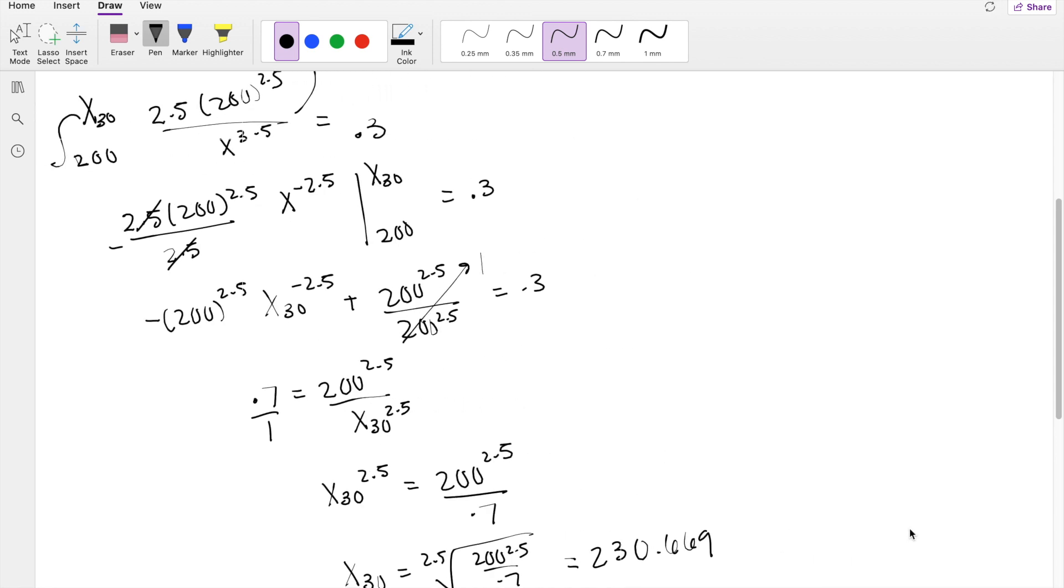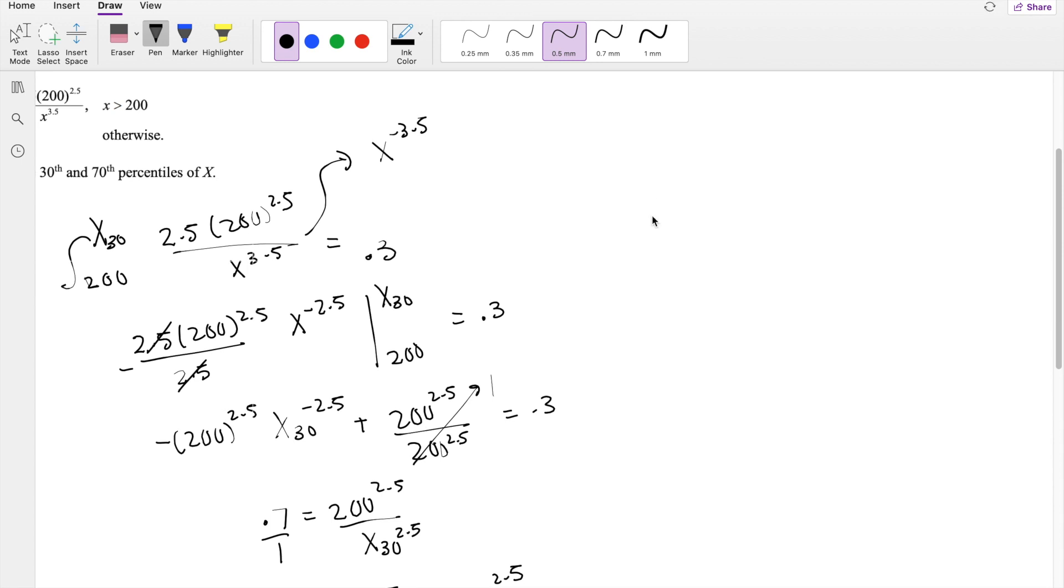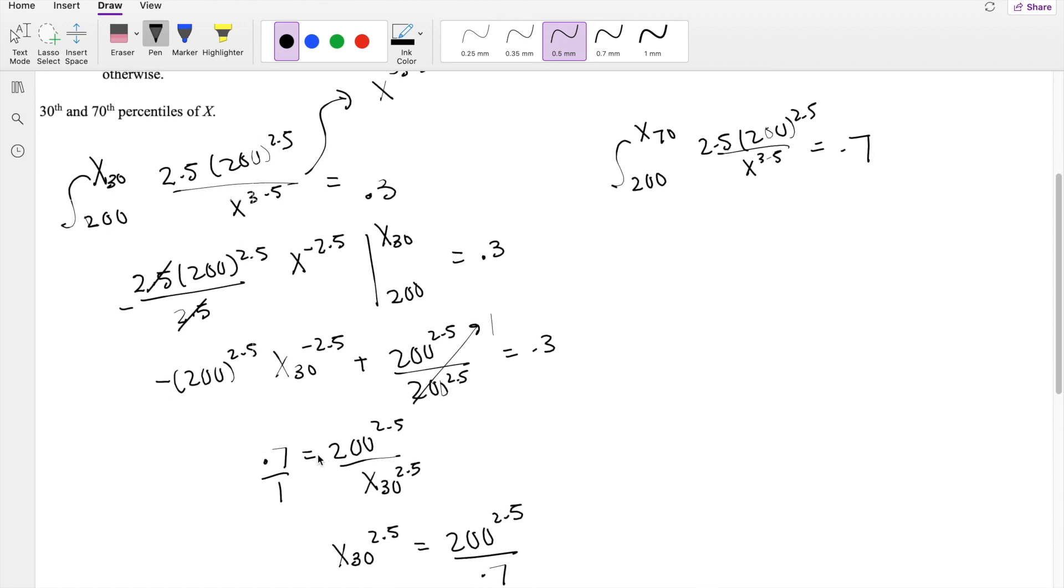So we have to do this exact same thing for the 70th percentile. So from 200 to whatever the 70th percentile is, integrating this out, 2.5 times 200 to the 2.5 over X to the 3.5 equals 0.7. Most of it stays the same until this part. Instead of 0.7 here, this is going to be 0.3 equals 200 to the 2.5 over X_70 to the 2.5.